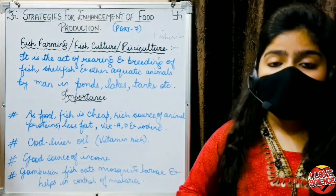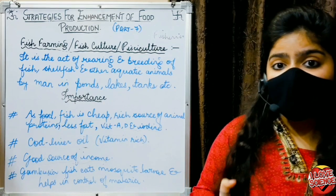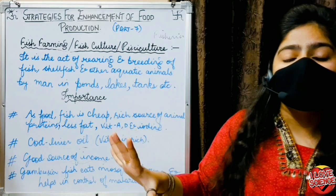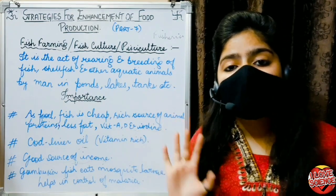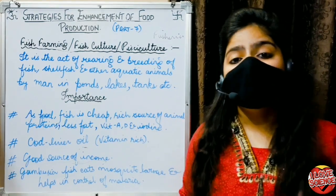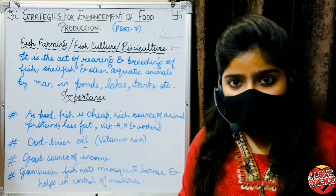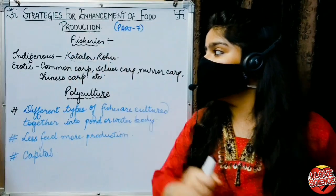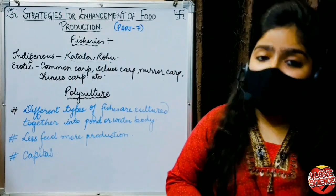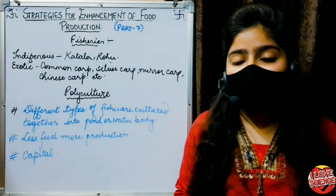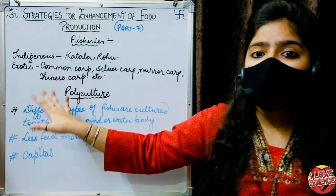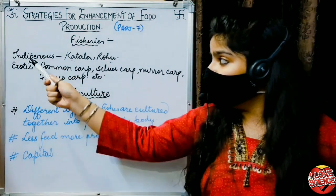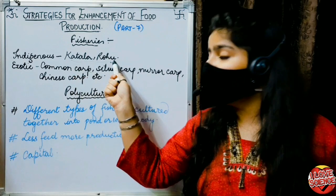Gambusia is a fish which we put in ponds and stagnant water. Where we put these fish, they eat mosquito larvae and eggs. So Gambusia is used for biological control of mosquitoes.